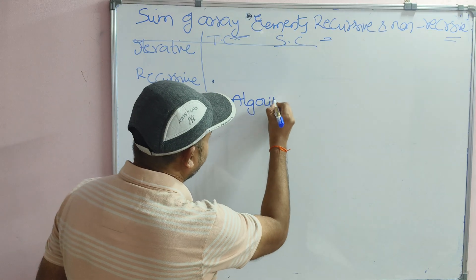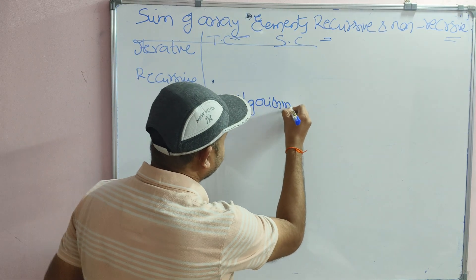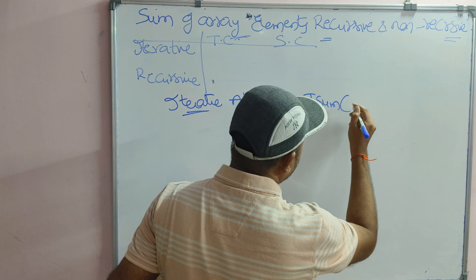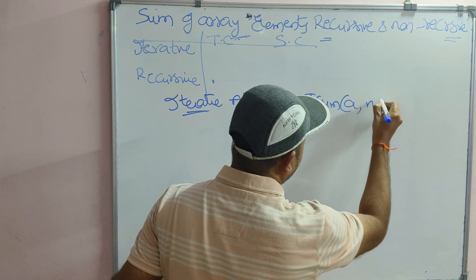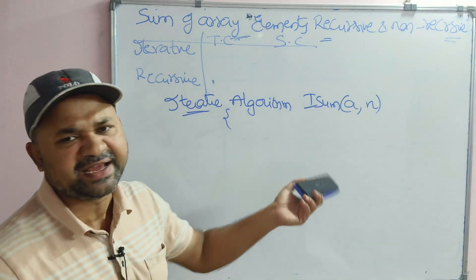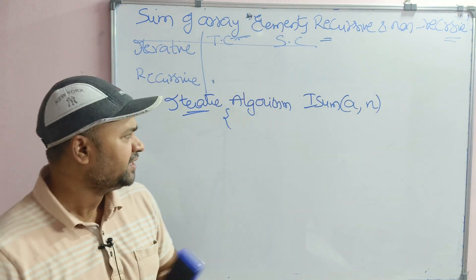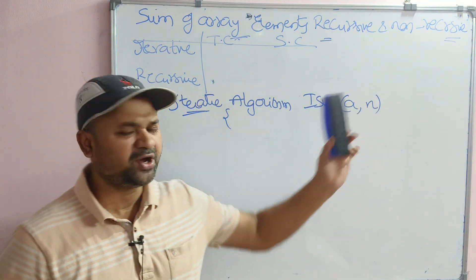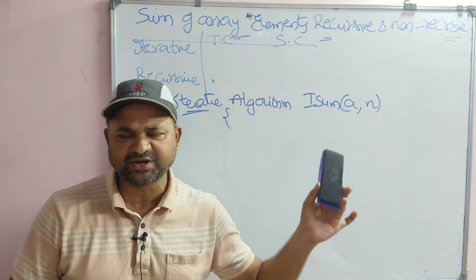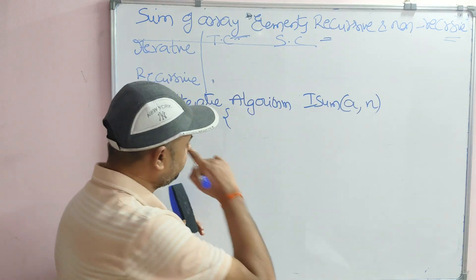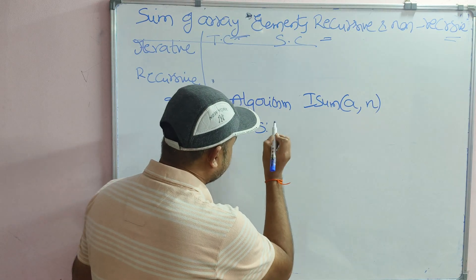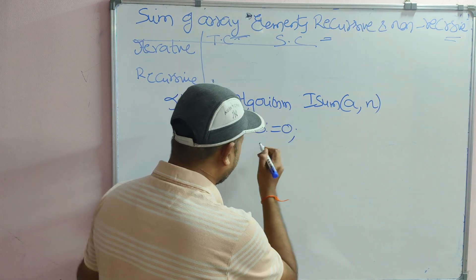The name of the algorithm is isum — iterative sum of array elements. It has two parameters: A, the name of the array, and N, the number of elements. There is no need for any data types while declaring the variables because this is not a program, this is an algorithm. Next, let us have a variable called sum.